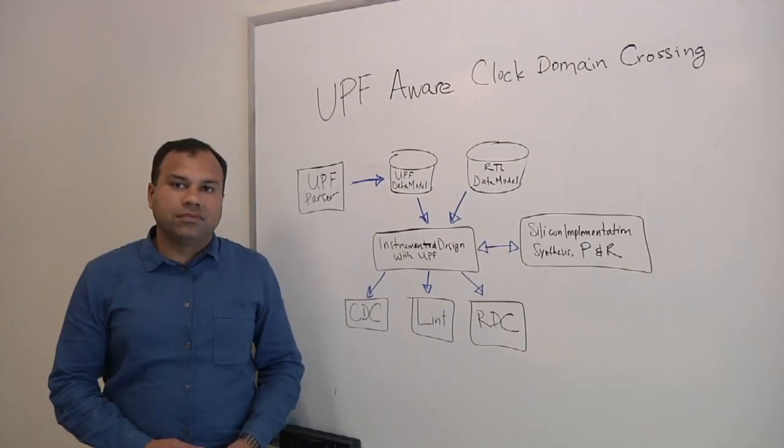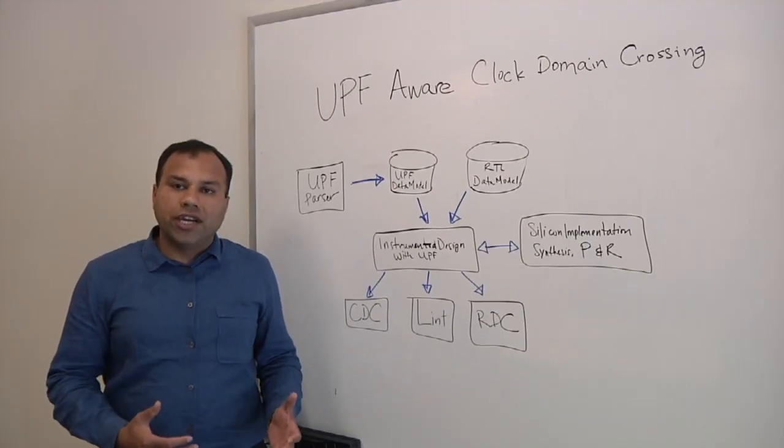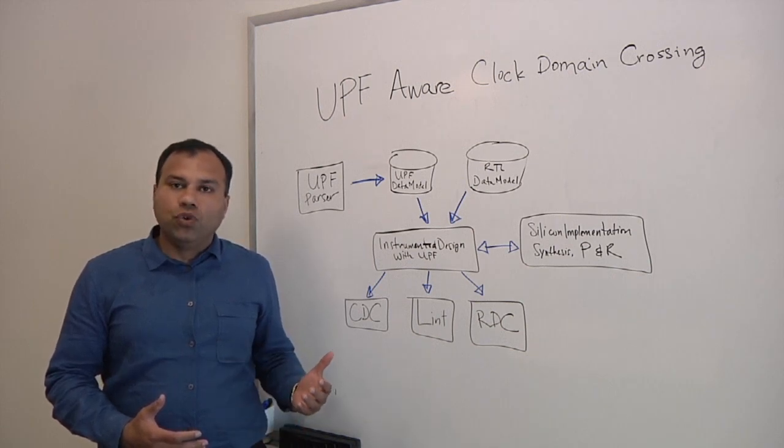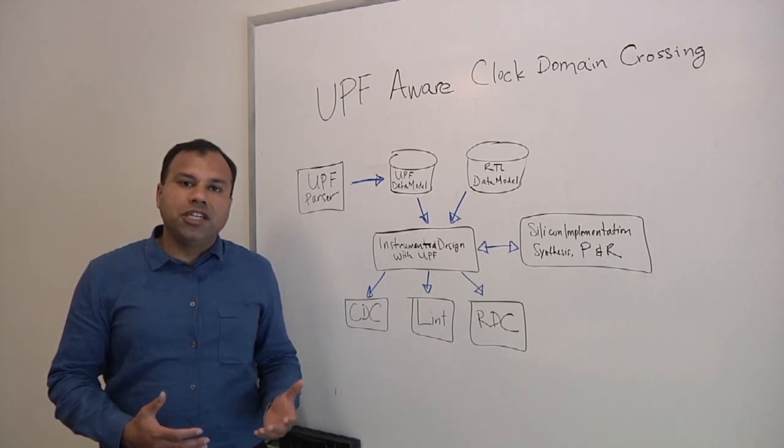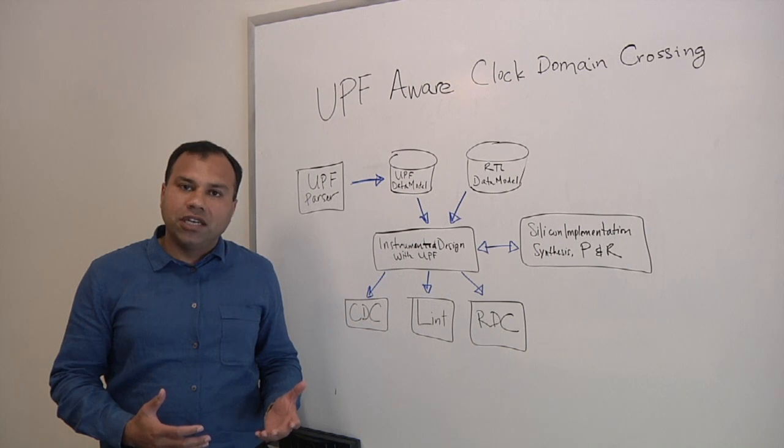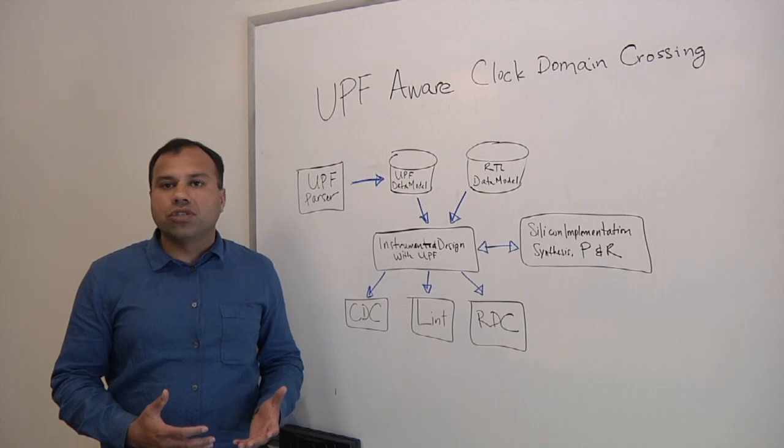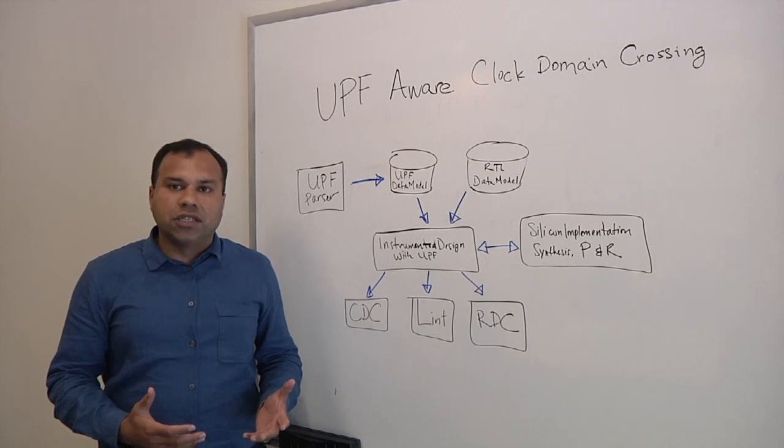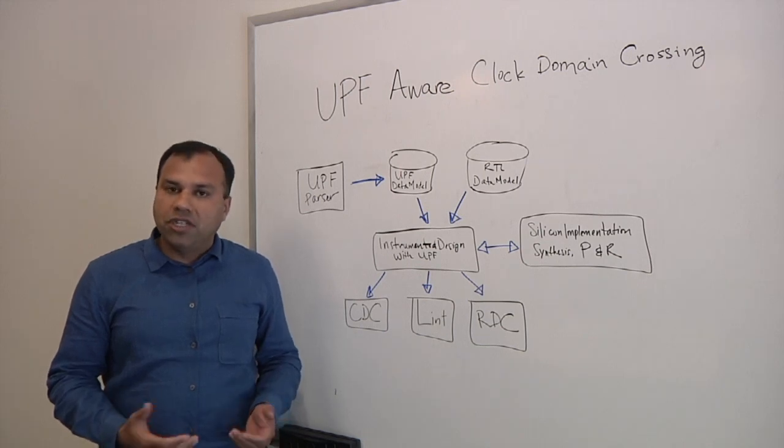Why don't you draw some of this out for us? Sure. What are we looking at here? So we are looking at UPF-aware clock domain crossing problem. And here, if you look at, as part of the design functionality, traditionally designers are verifying RTL and for the clock domain crossing problems, when a signal is crossing from one asynchronous clock to another, typically because of untimed paths, they can violate the setup and hold time, leading to meta-stability.